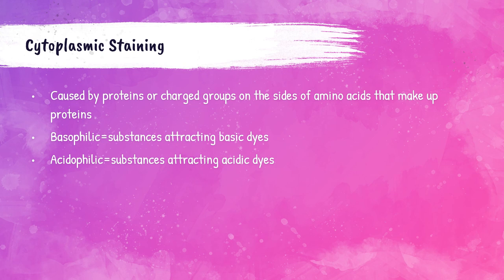We have a much better understanding of the mechanism of cytoplasm staining. The staining is due to proteins or charge groups on the side chains of amino acids that make up those proteins. Proteins have a terminal amino group (NH₂) and a terminal carboxyl group (COOH). These two groups cause the protein to be either positively or negatively charged, based on the pH. In an electrical field, a net positive charge causes migration to the cathode — the negatively charged electrode — and a net negative charge causes migration to the anode, the positively charged electrode. When there is an equal amount of positive and negative charges, there is no migration, and this is called the isoelectric point, or IEP.